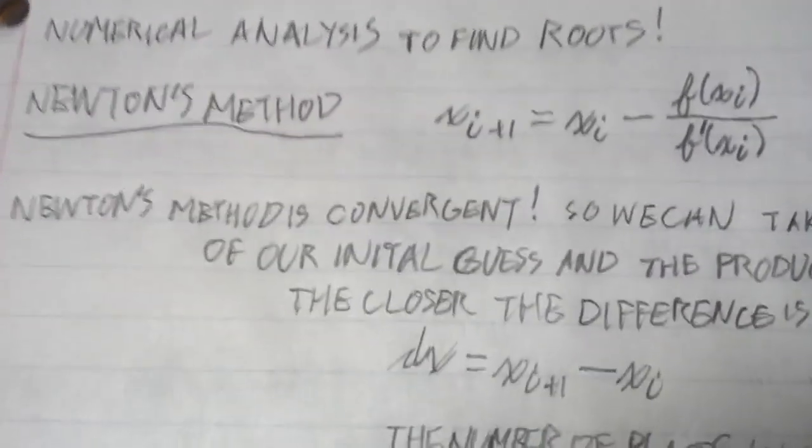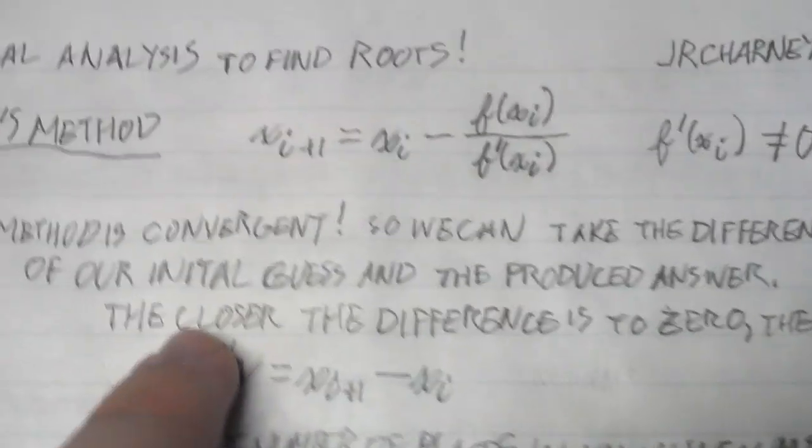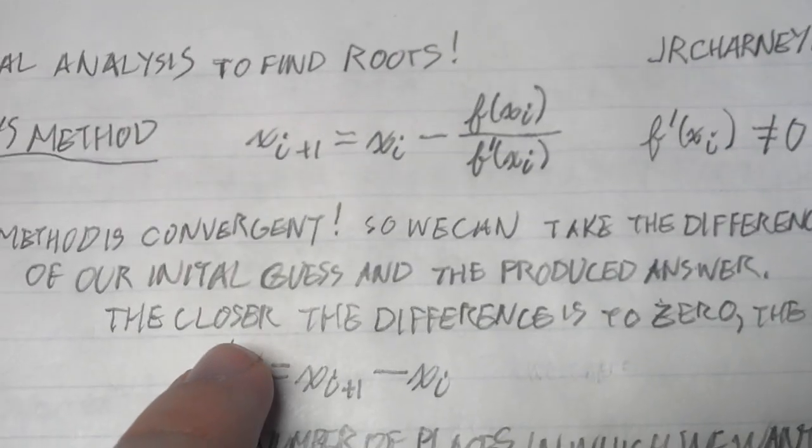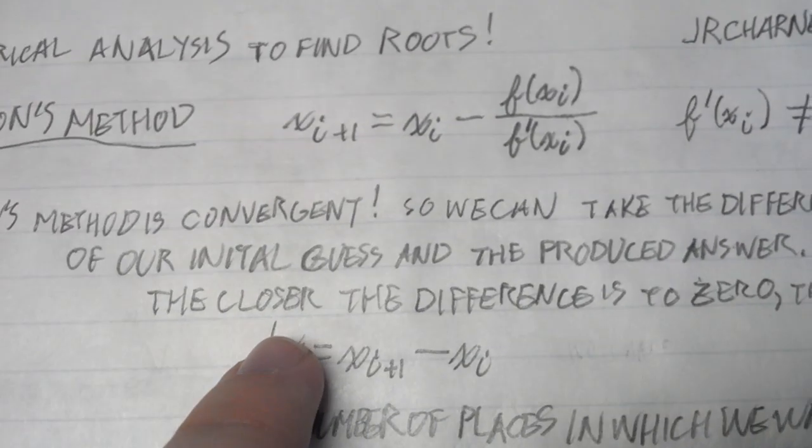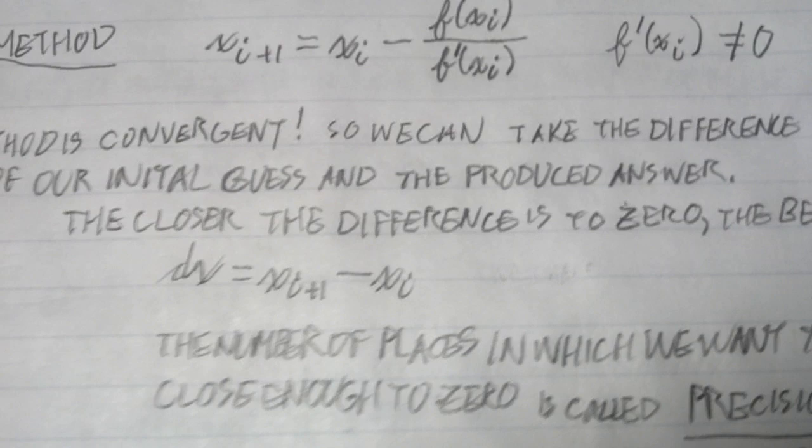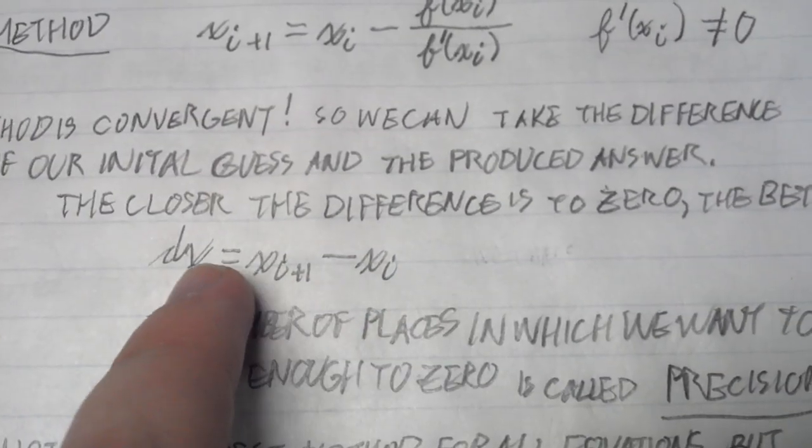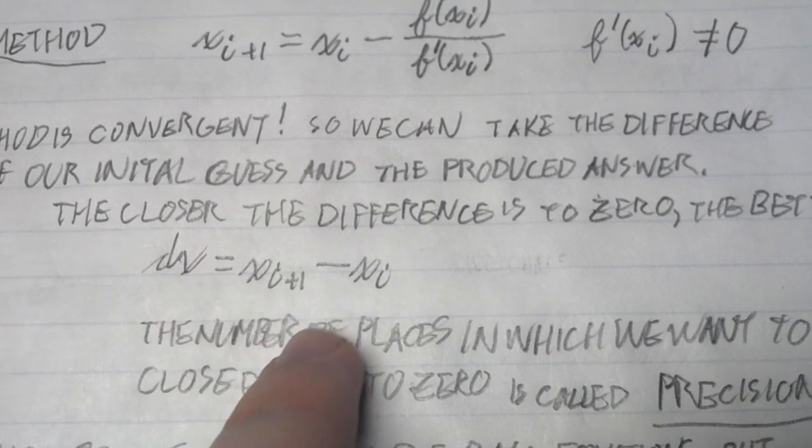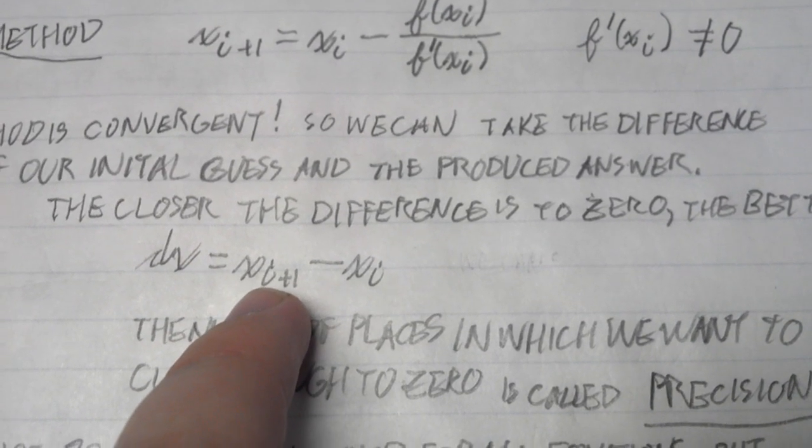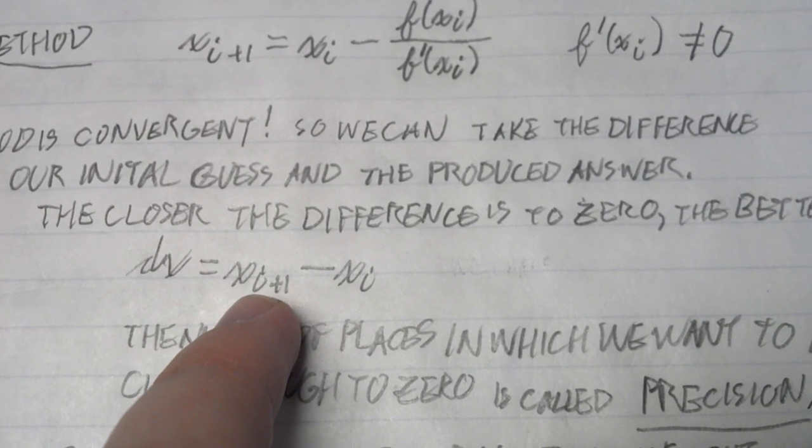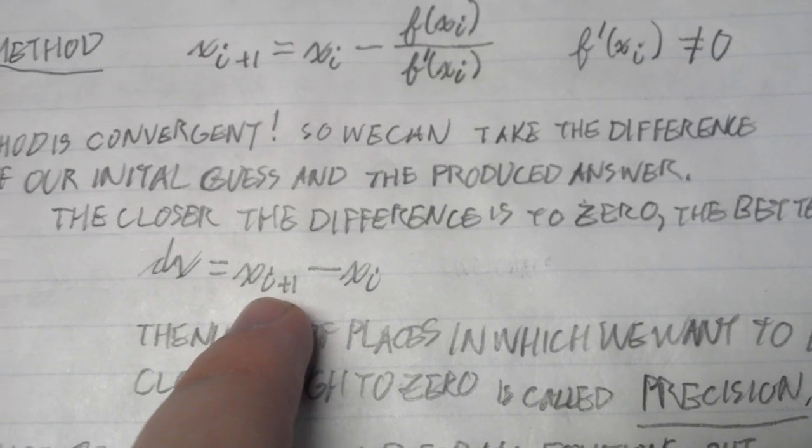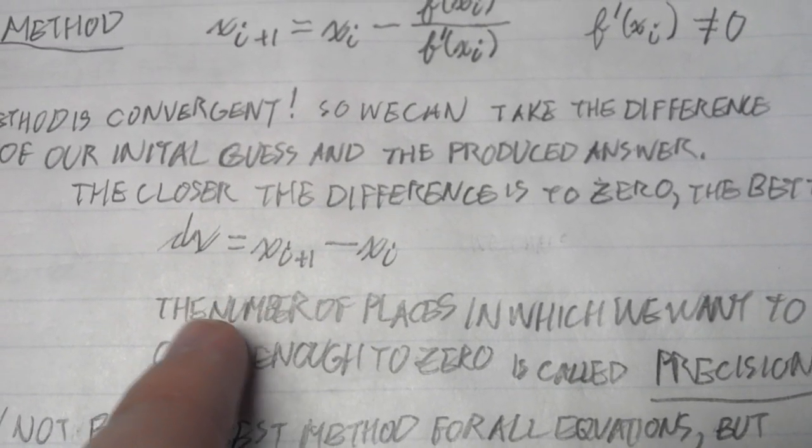Newton's method is convergent, so we can take the difference of our initial guess and the produced answer. The closer the difference is to zero, the better. We do this at least several times, depending on the equation.